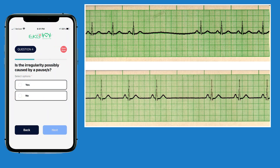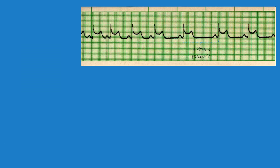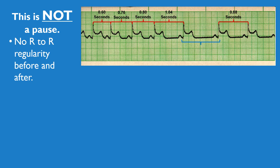Question four asks whether the irregularity is possibly caused by pauses. This can be a confusing area, so let's revisit what constitutes a pause versus what does not. Looking at this ECG, it appears there might be a pause between the flashing bracket. To make that determination, we need to measure the R to R intervals before and after this gap. It doesn't appear there is any consistent intervalling, and when we actually measure the intervals, there is no consistent R to R intervalling before or after this gap. Since there isn't consistent intervalling, this is not a pause — it's just a larger gap within a rhythm that is basically irregular.